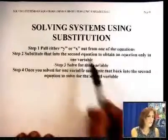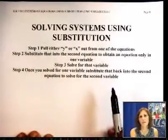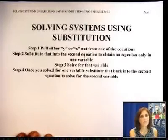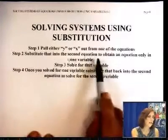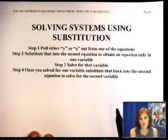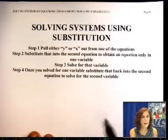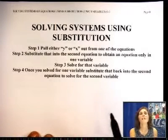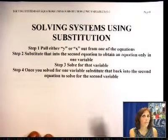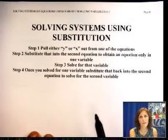First step, pull either x or y from one of the equations. Just pull it x equals or y equals. The second one, you are going to take that equation that you pulled the variable out and put it into the second one. That way you are going to have one equation only with one variable in it.